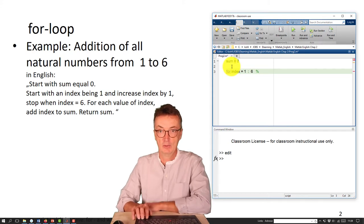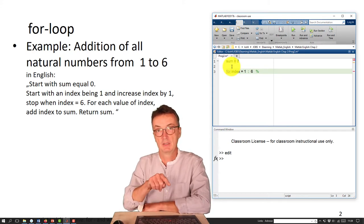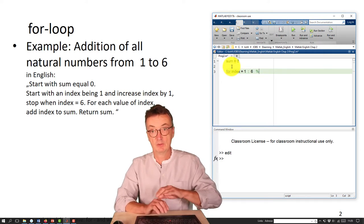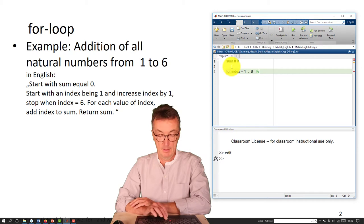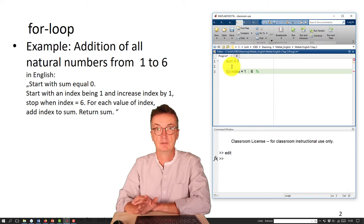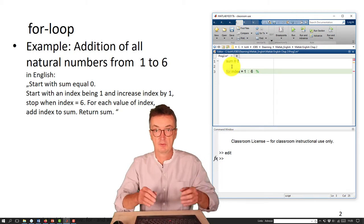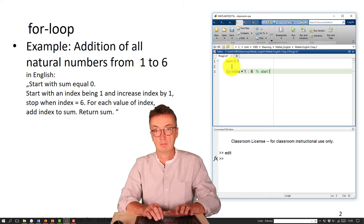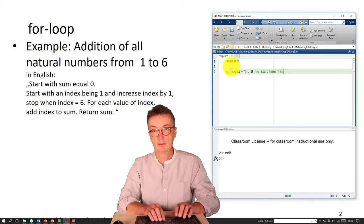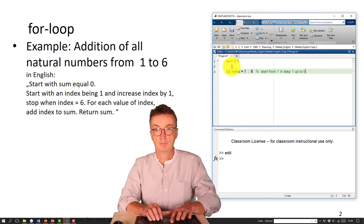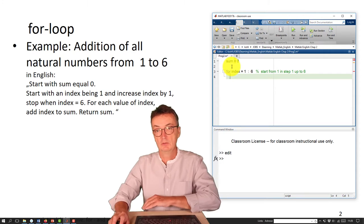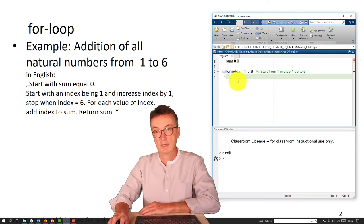Here another note, a comment you indicate by this percentage sign. And whenever you type that in, the comment is highlighted in green color. So I could just write that down starting from 1 in step 1 up to 6. Okay, that's the definition you need to know how the for loop operates.